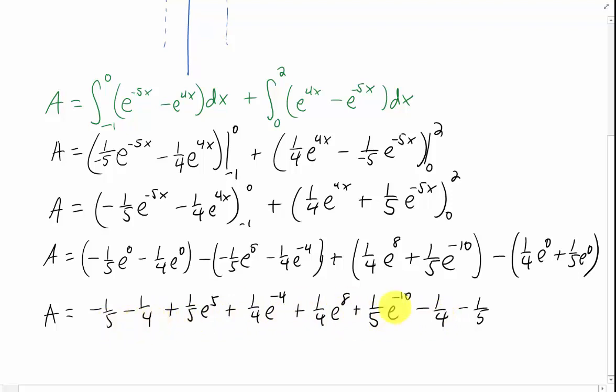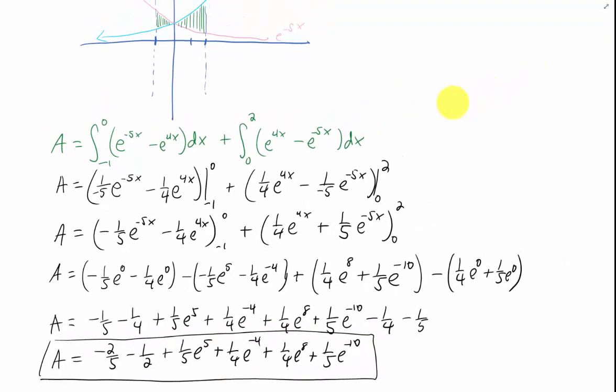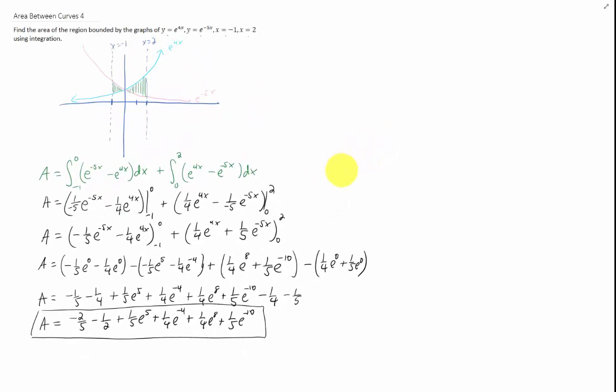We can't combine the negative 1 fourths and the negative 1 fifths. That would give us negative 2 fifths and negative 2 fourths. The rest of the terms, I don't think we can really reduce. So we're just going to box that up and call that the answer. And that is going to do it for this problem.